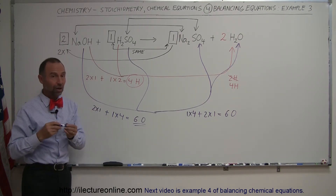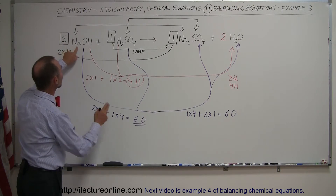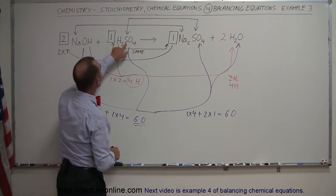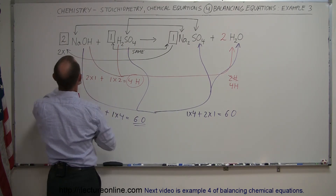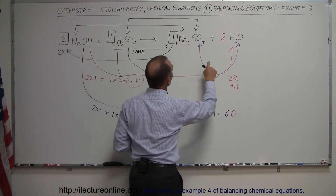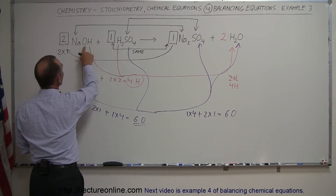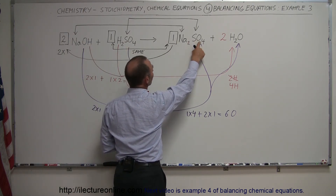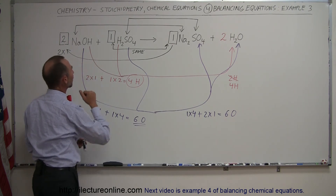Let's verify the balanced equation. Sodium: two times one on the left, one times two on the right — balanced. Sulfur: one on each side — balanced. Hydrogen: two times one plus one times two equals four on the left, two times two equals four on the right — balanced. Oxygen: two times one plus one times four equals six on the left, one times four plus two times one equals six on the right — six equals six, balanced.